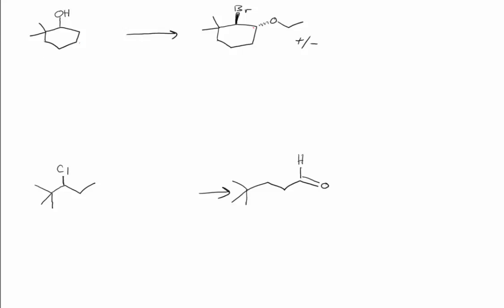Here are a couple of practice synthesis problems. For this first question, we can observe that there are two functional groups here, the ether and the bromine, and they're in a one-two relationship, and they are in an anti-relationship as well. And those are our clues as to what we want to do sort of as our last step.